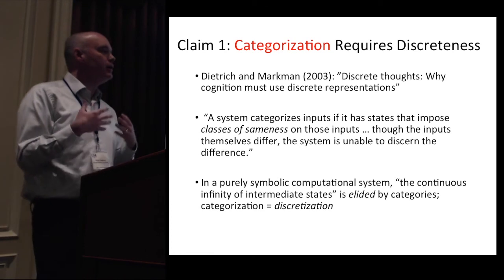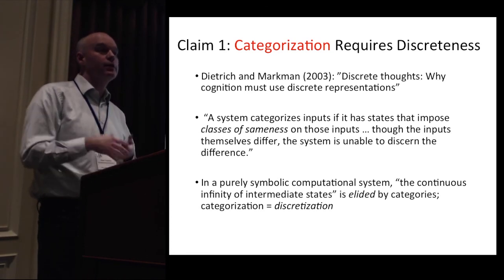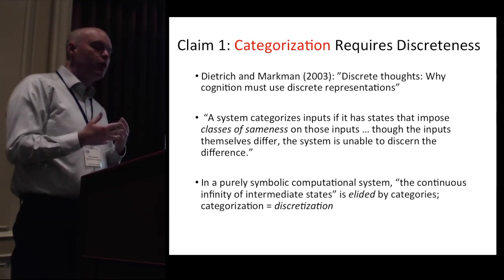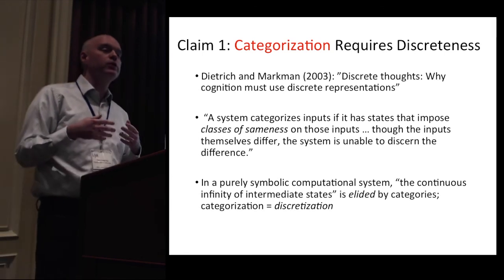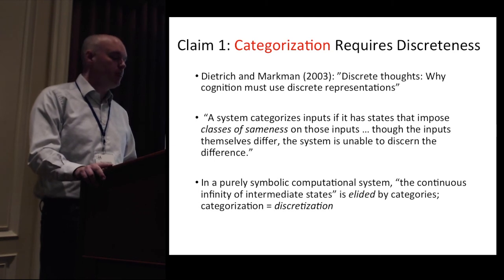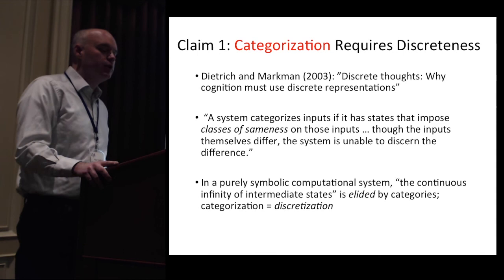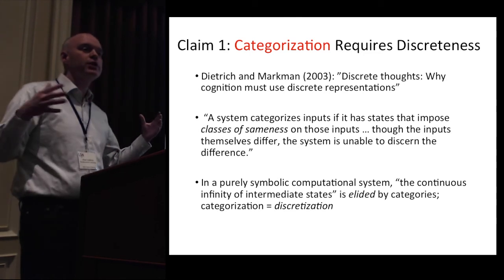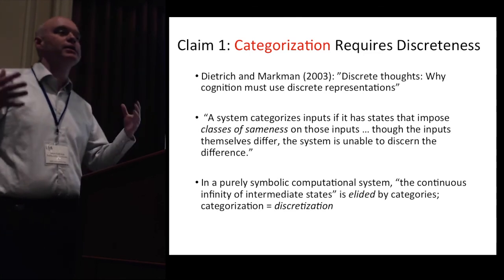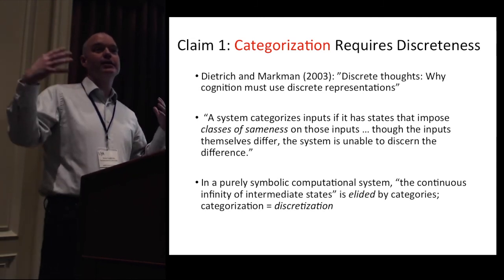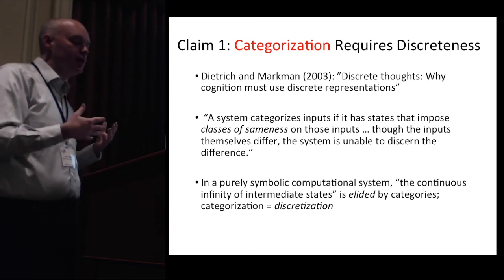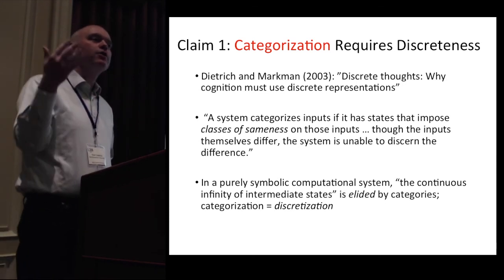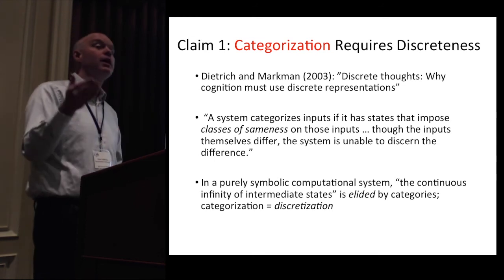The first broad claim in cognitive theory about why we need discreteness is categorization. Dietrich and Markman offer a nice summary in their 2003 paper: a system categorizes if it has states that impose classes of sameness on inputs — though the inputs differ, the system is unable to discern the difference. In a purely symbolic computational system, there is a continuous infinity of intermediate states between two categories — say, between a 'duh' and a 'ta' sound across a continuous range of voice onset times. Those distinctions are elided: categorization is equivalent to discretization.